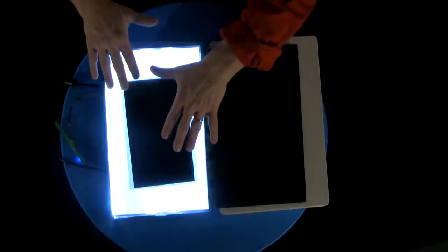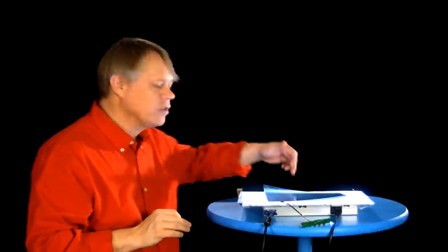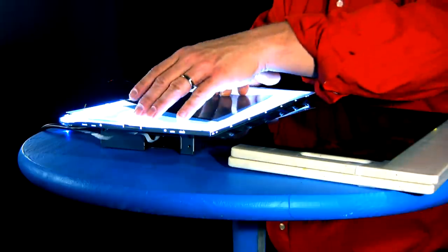Instead, what we do is we place these two polarizers 90 degrees to each other, this configuration that allows no light through. And then, if we want light to pass, we twist the light within the glass pane to match the front polarizer.